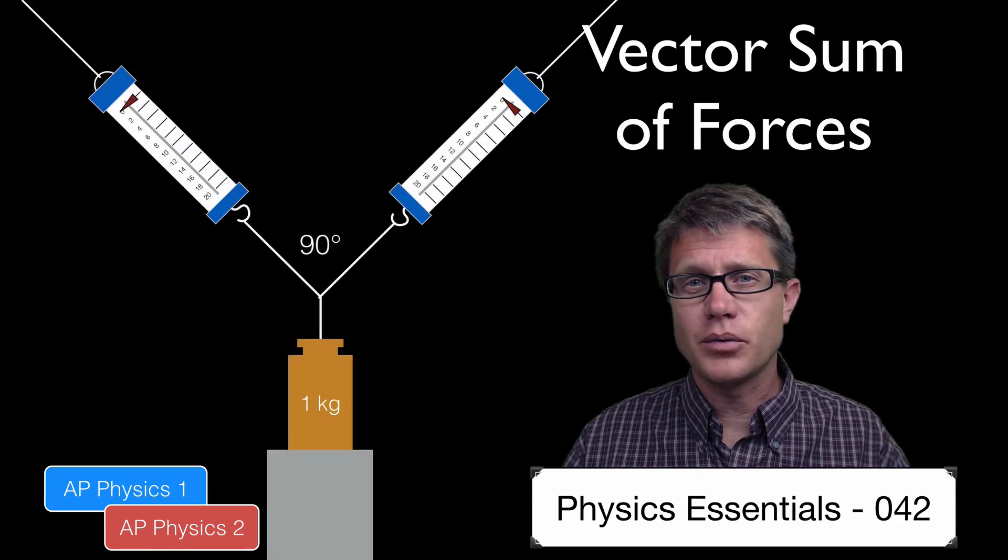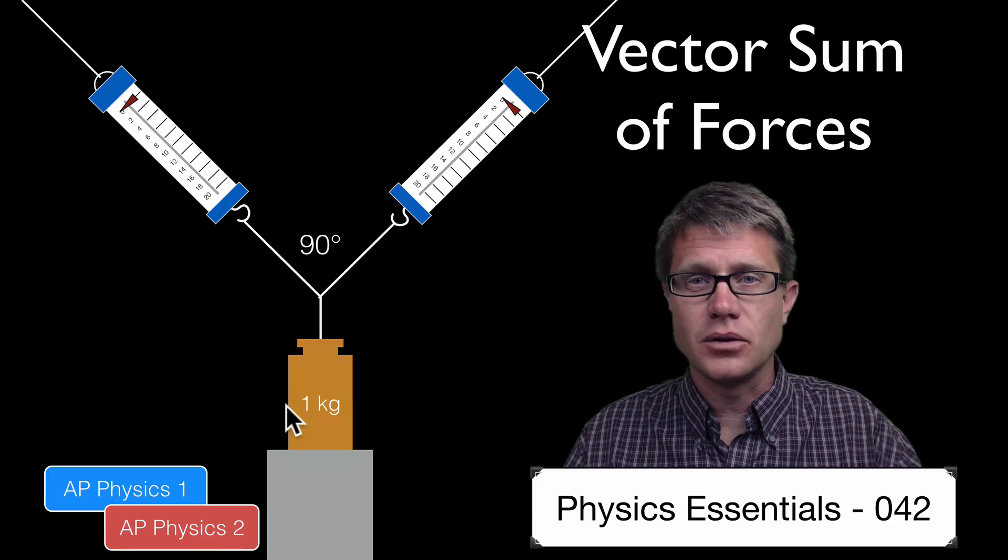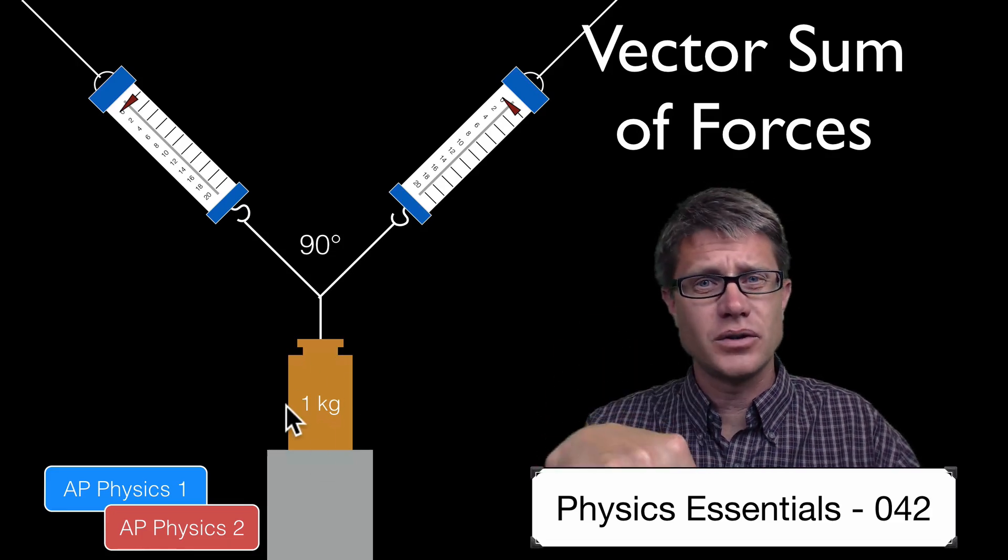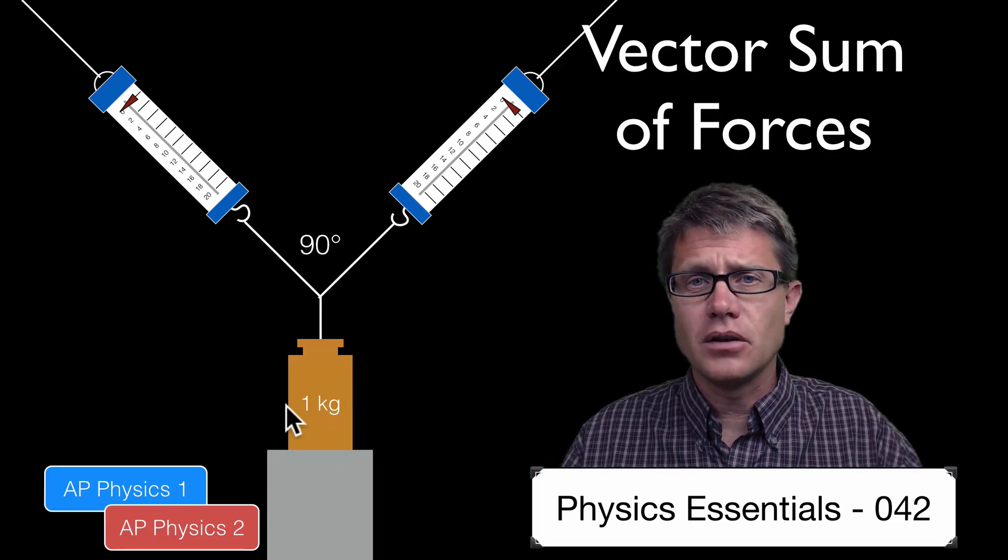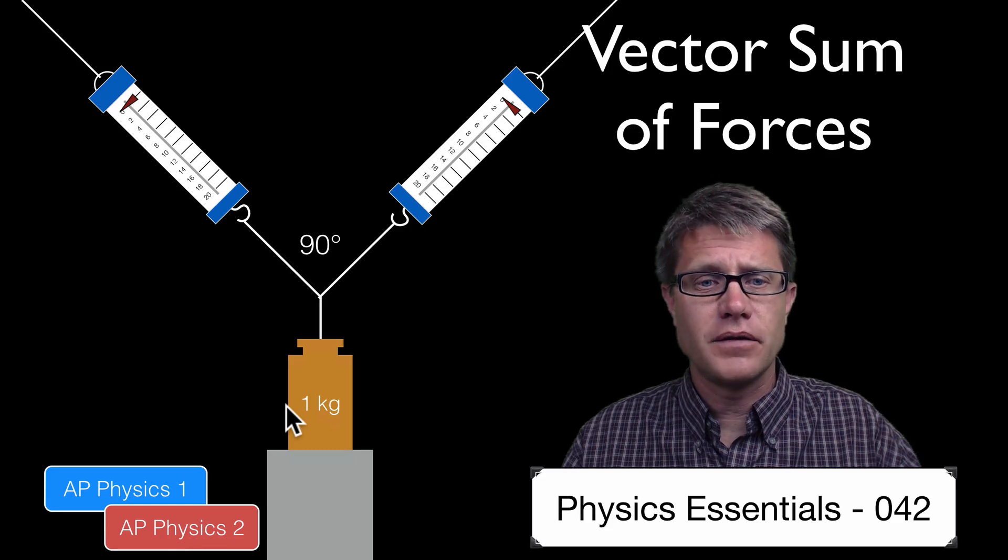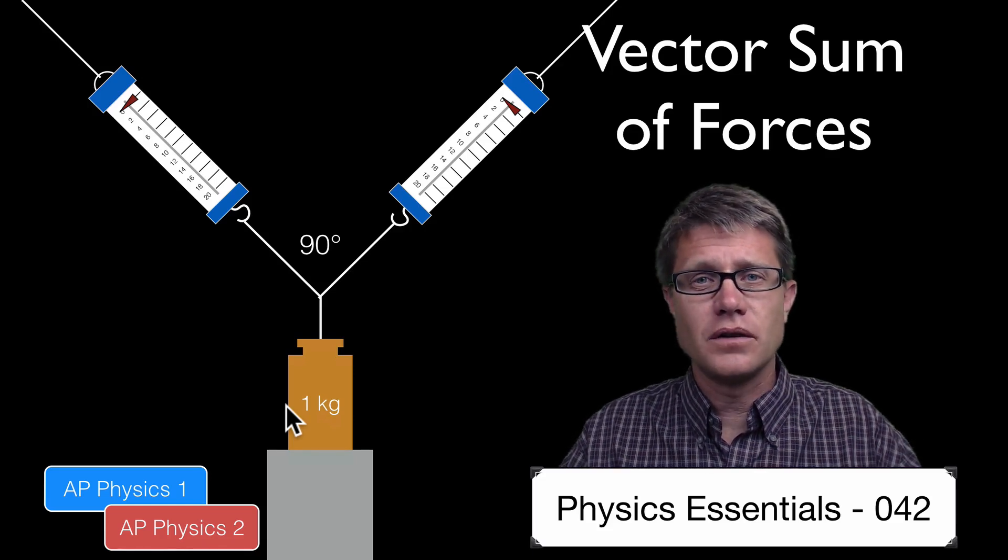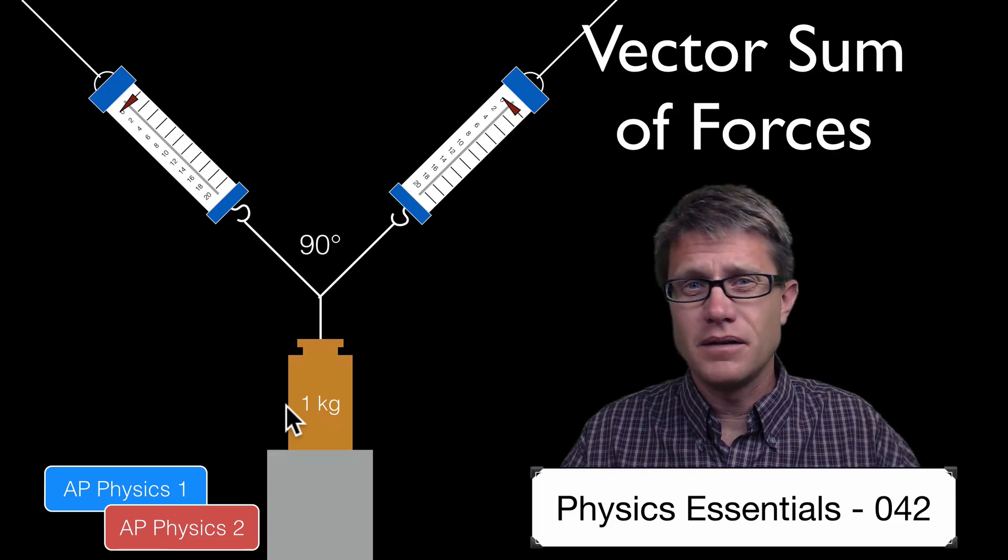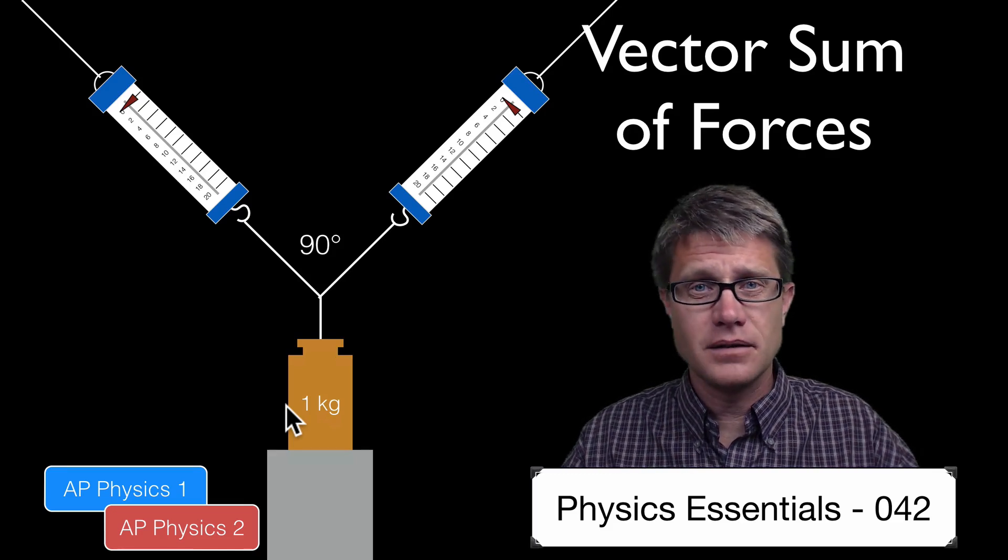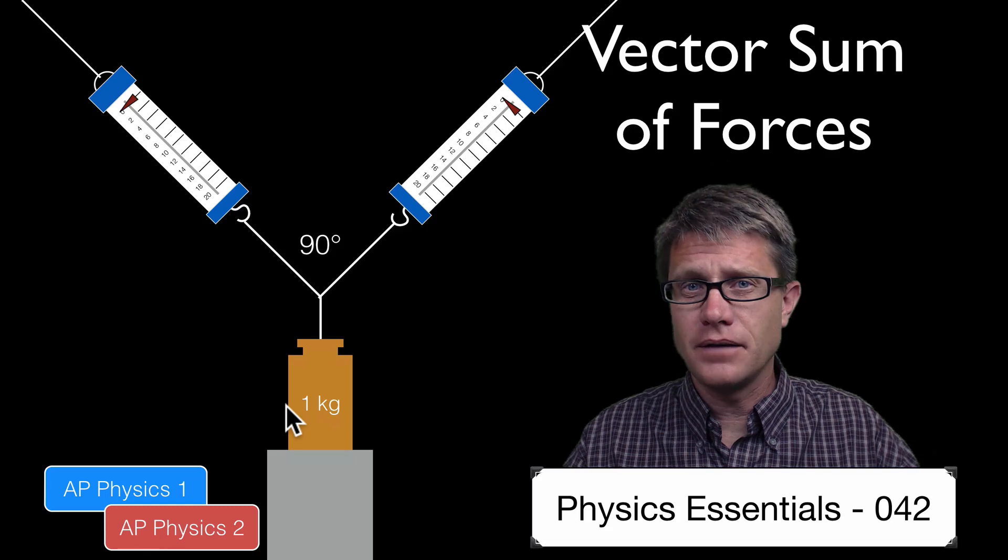But let me give you that same problem again. Now we have got the 1 kilogram mass here. So a 10 newton force, roughly a 10 newton force down. And so what are each of those force meters going to read if they are now separated by a 90 degree angle? In other words they are exerting forces in a different direction. Will it each be 5 newtons again? Will it be less than 5 newtons? Will it be greater than 5 newtons?